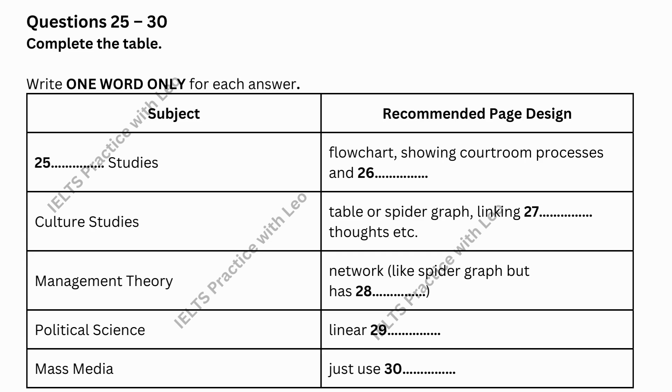But what about management theory? How would you approach that? The same as with culture studies. I'd use a network, which is basically the same as a spider graph, linking thoughts, although this time there are directions involved. It is this element that makes it different. The fact that the thoughts go one way and not the other. OK, has directions. It sounds logical. What about the other subjects, such as political science? There's no predictable order to that. Well, for that, I'd just put my notes in a line. That is, in linear or straight-line fashion. And these notes would use symbols, of course, to save time.